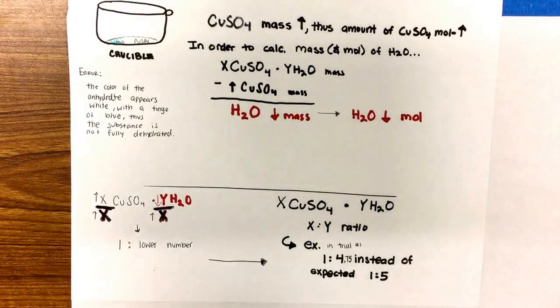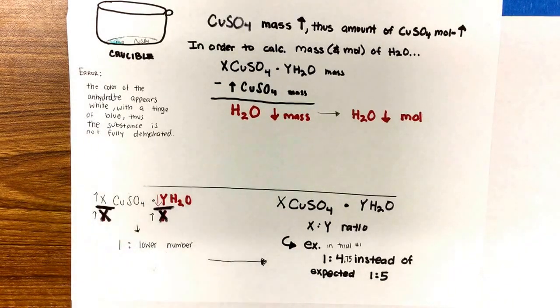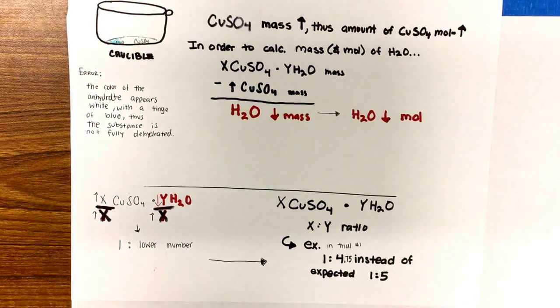In the hydrate lab, we noticed in trial one there was a 1 to 4.75 ratio for the CuSO4 to hydrate ratio when it should be the expected 1 to 5 ratio. This can be concluded because a student could have perceived a tinged blue-white substance to be fully dehydrated when in fact it was not.